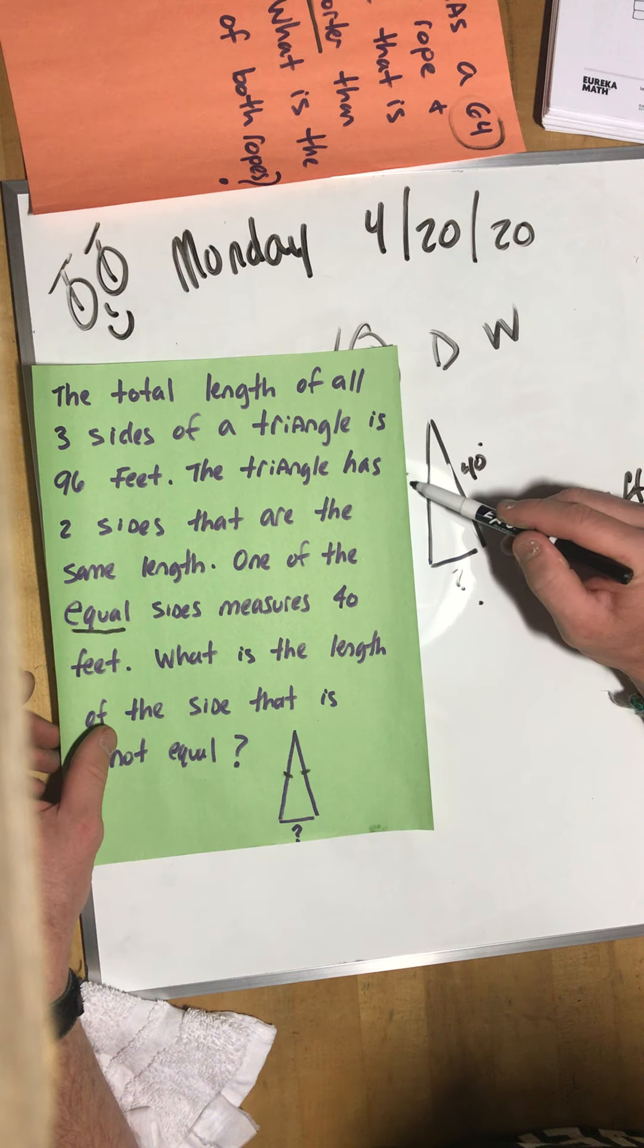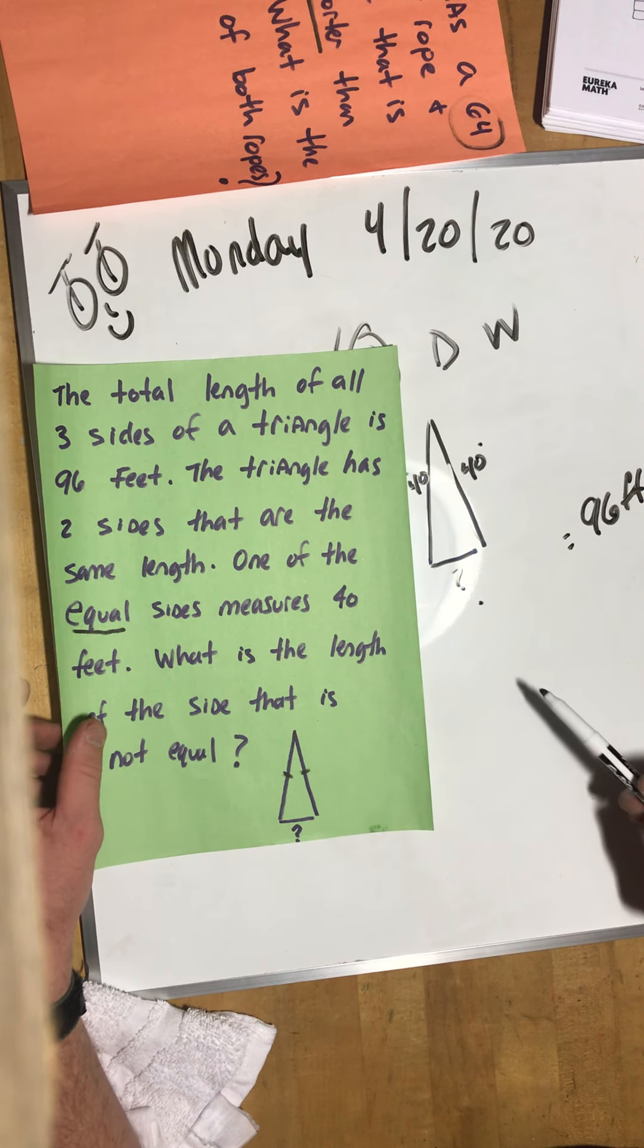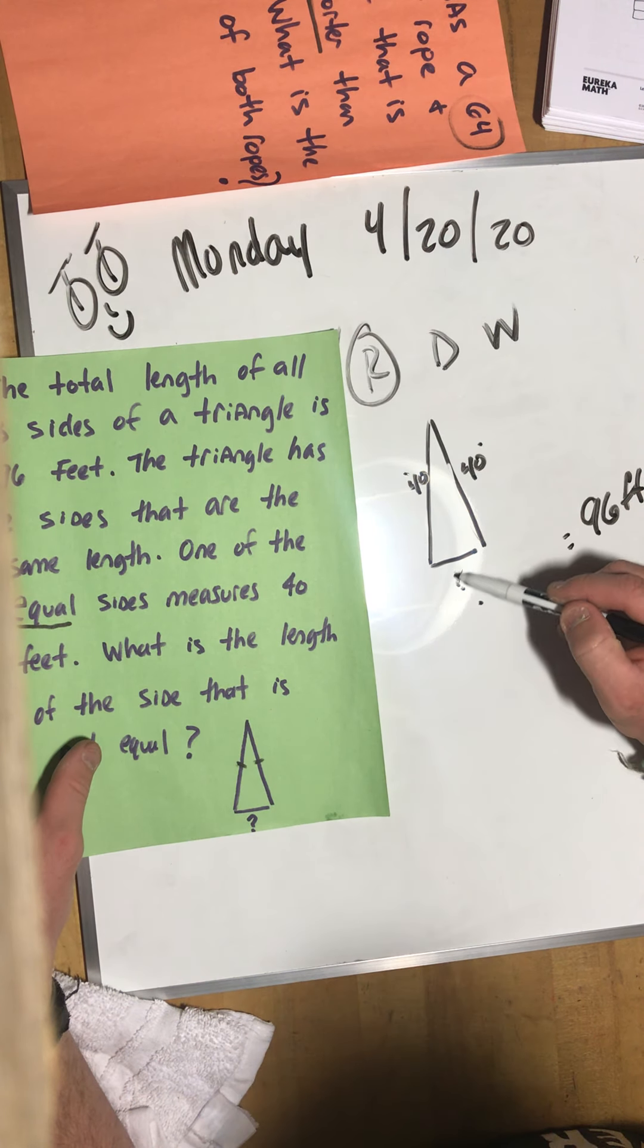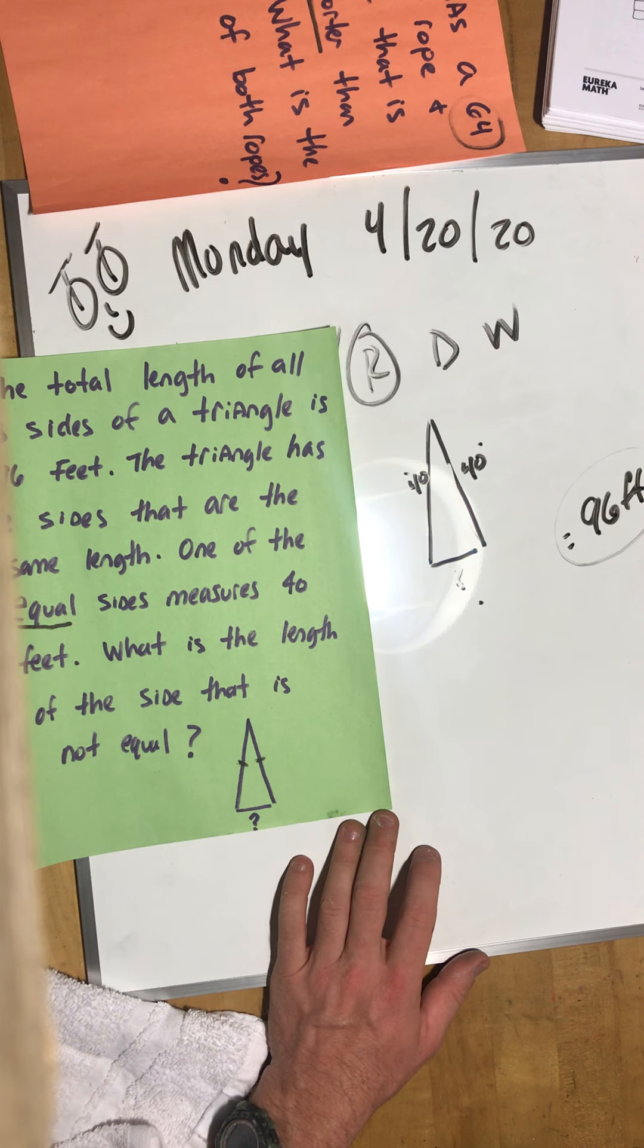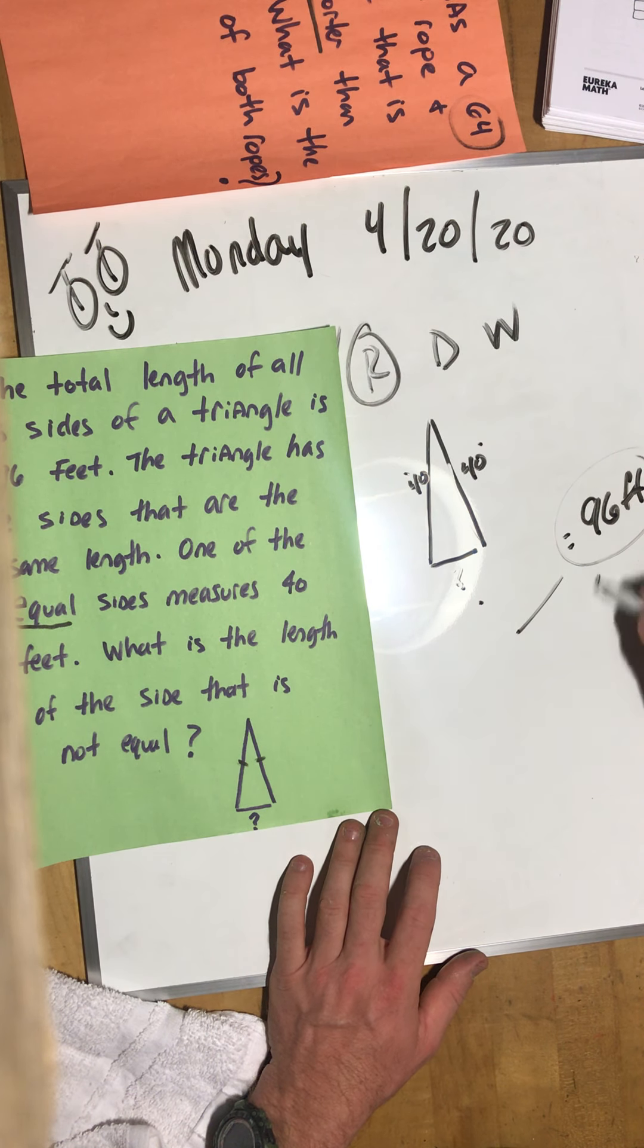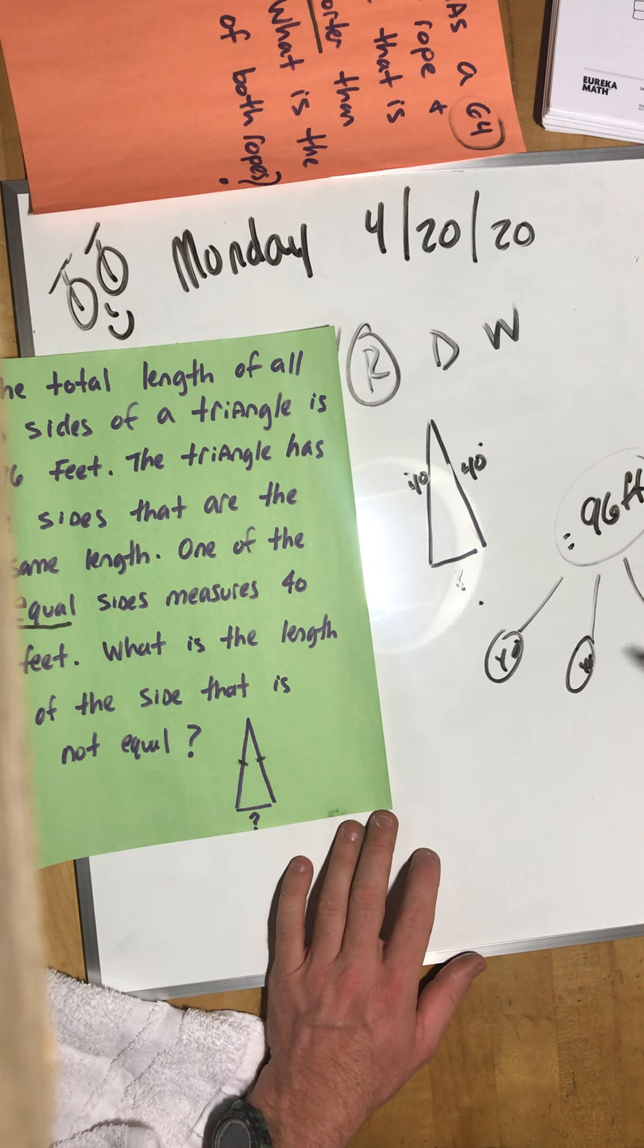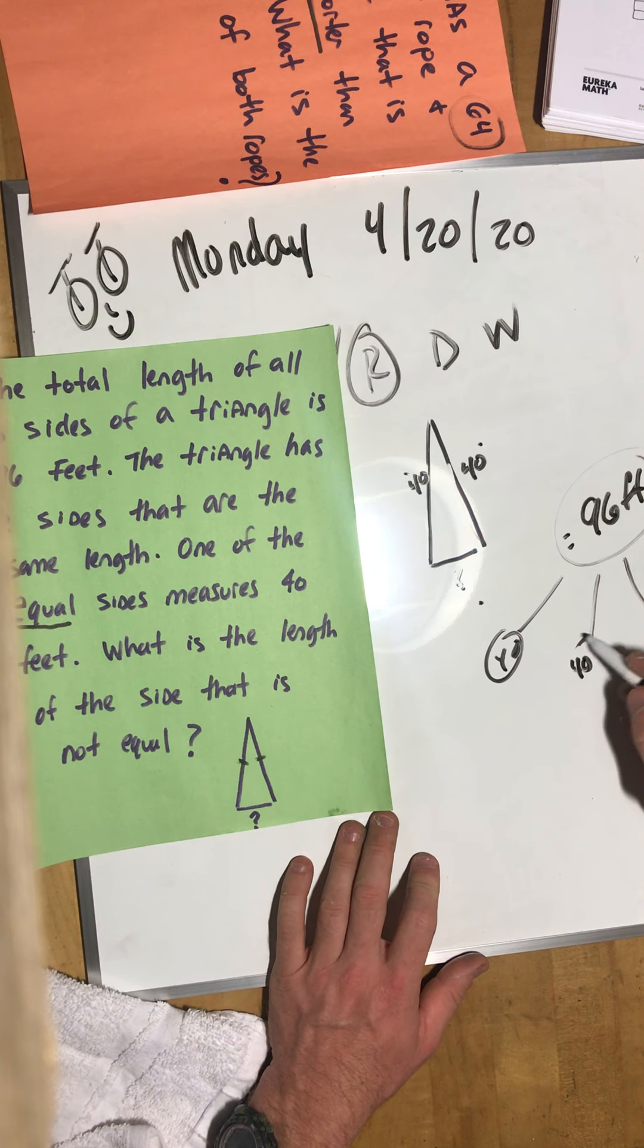The total length of the triangle is 96 feet. Here's our triangle and all three sides equals 96 feet. We need to find out this side. The triangle has two sides that are the same length, that's these two. One of the equal sides, equal means the same, measures 40 feet. So this one is 40 which means this one is 40 because they're equal.